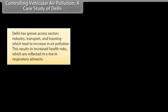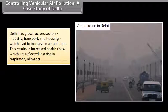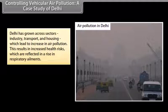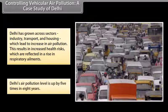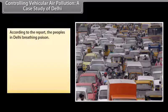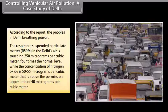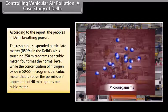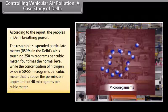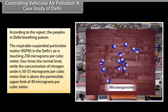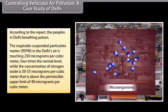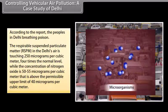Controlling vehicular air pollution — a case study of Delhi. Delhi has grown across sectors: industry, transport and housing, which has led to increased air pollution. This results in increased health risks reflected in a rise in respiratory ailments. Delhi's air pollution level is up by 5 times in 8 years. The respirable suspended particulate matter (RSPM) in Delhi's air is touching 250 micrograms per cubic meter — four times the normal level — while the concentration of nitrogen oxide is 50 to 55 micrograms per cubic meter, above the permissible upper limit of 40 micrograms per cubic meter.